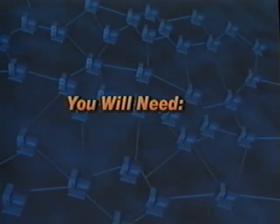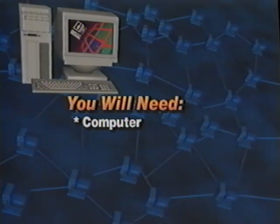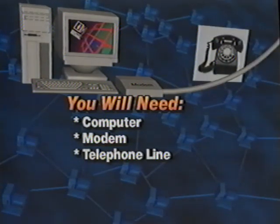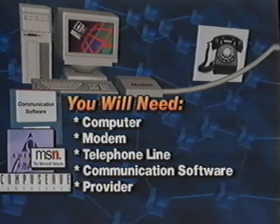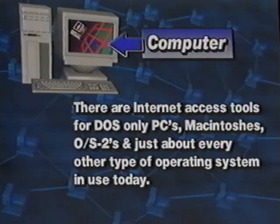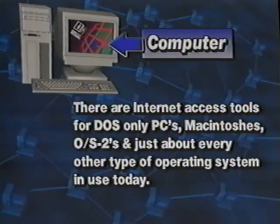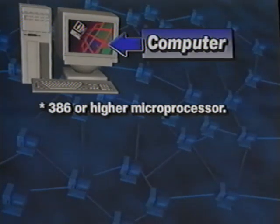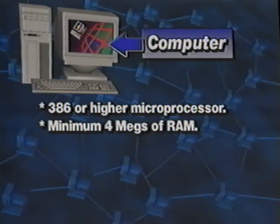To gain access to the internet, you need a computer with a modem connected to a telephone line, data communication software, and a provider. Your computer should have a 386, 486, or Pentium microprocessor. You will need at least four megabytes of RAM — eight megs is better and 16 megs is better yet. Your hard drive will need at least three to five megabytes of free space, but it is recommended to have at least 15 megabytes available for AOL's new 3.0 version to run smoothly. Some programs like Microsoft Network recommend as much as 30 megs of free hard disk space.